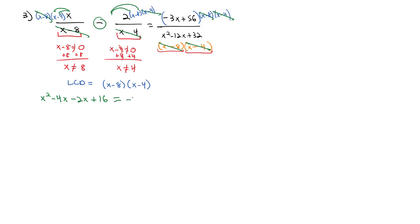Equals, only the numerator left on the other side, negative 3x plus 56. And now we can start solving. We know if there's an x squared, it needs to be equal to 0. So we'll add 3x to both sides. We'll also subtract 56 from both sides so that it equals 0. And then we have x squared minus 3x minus 40 equals 0.